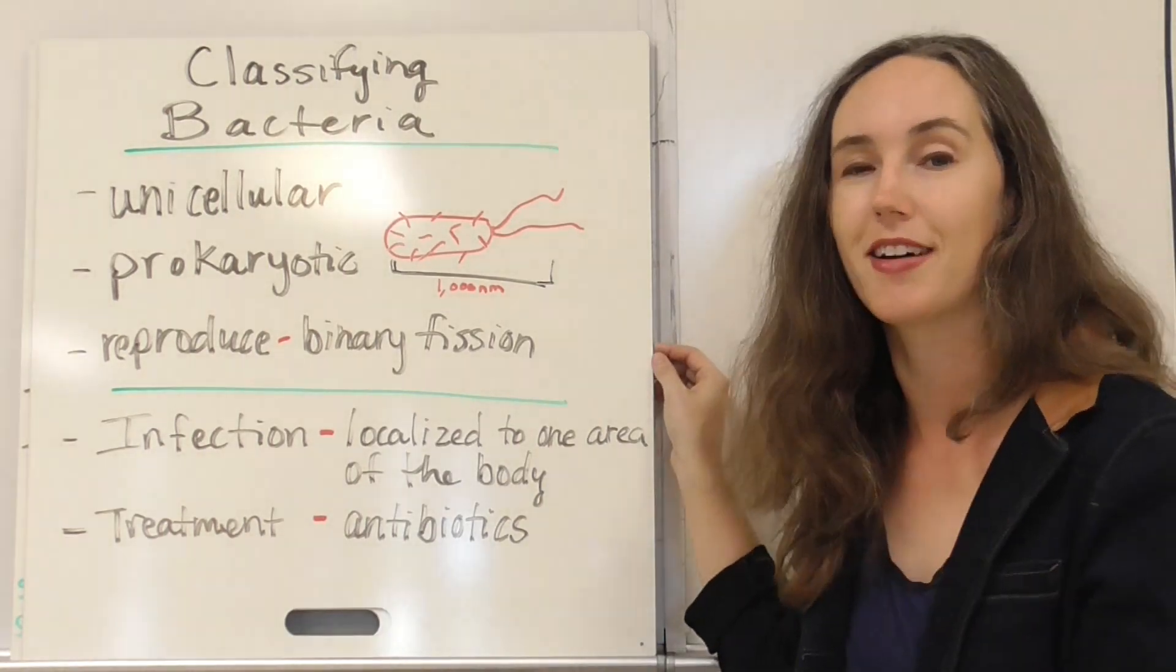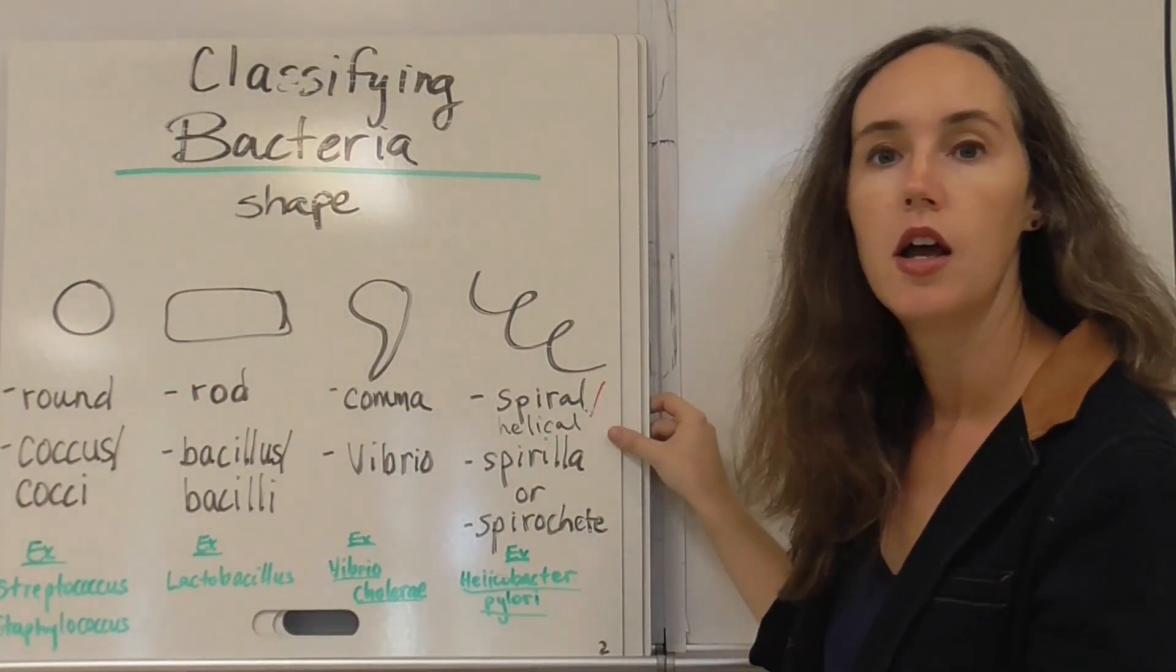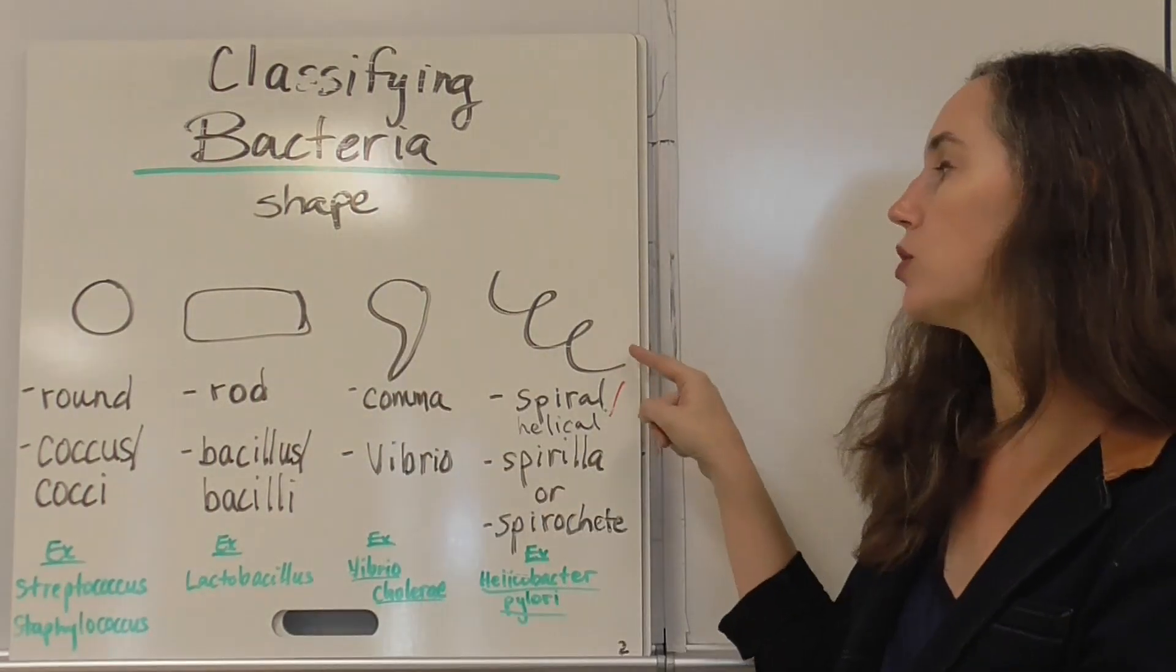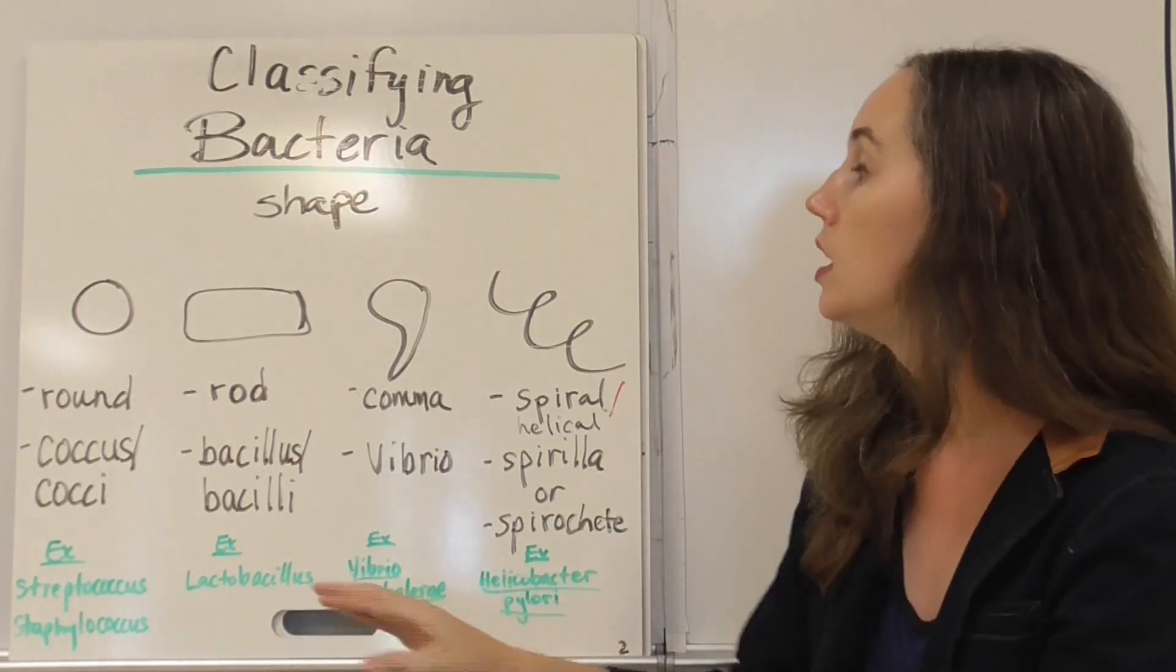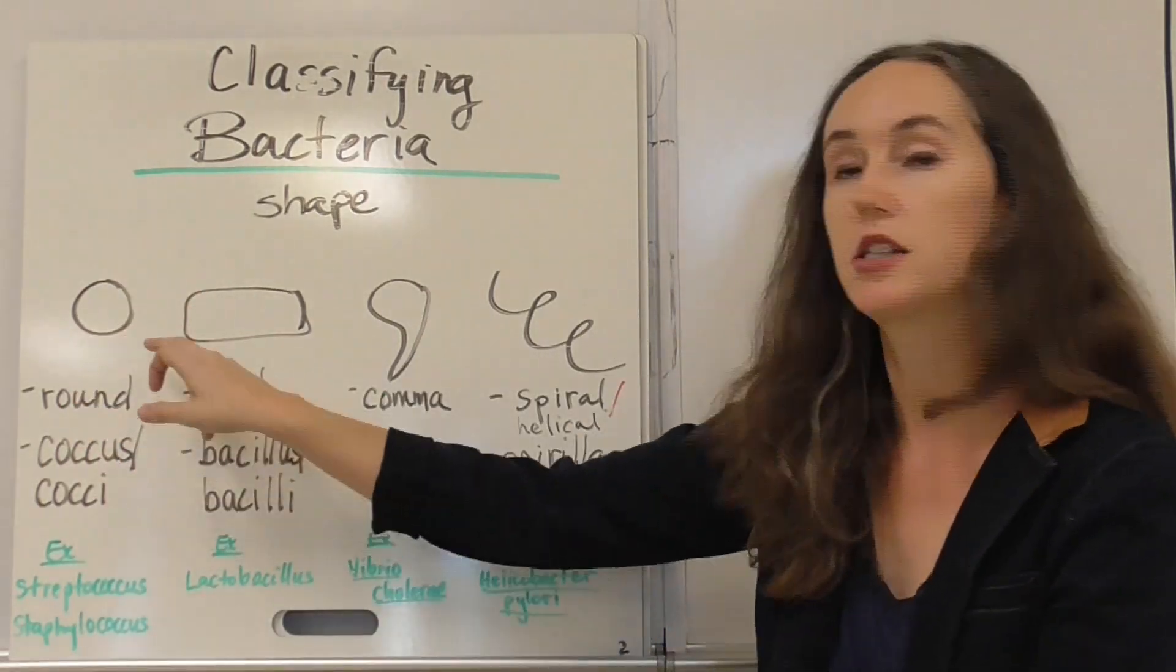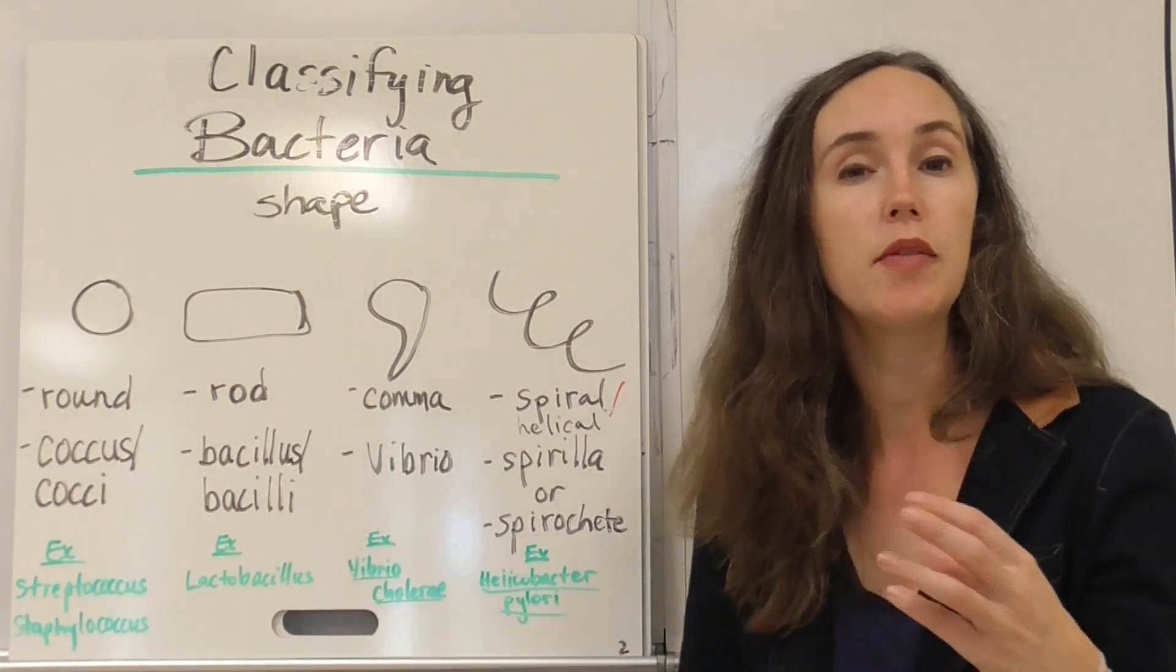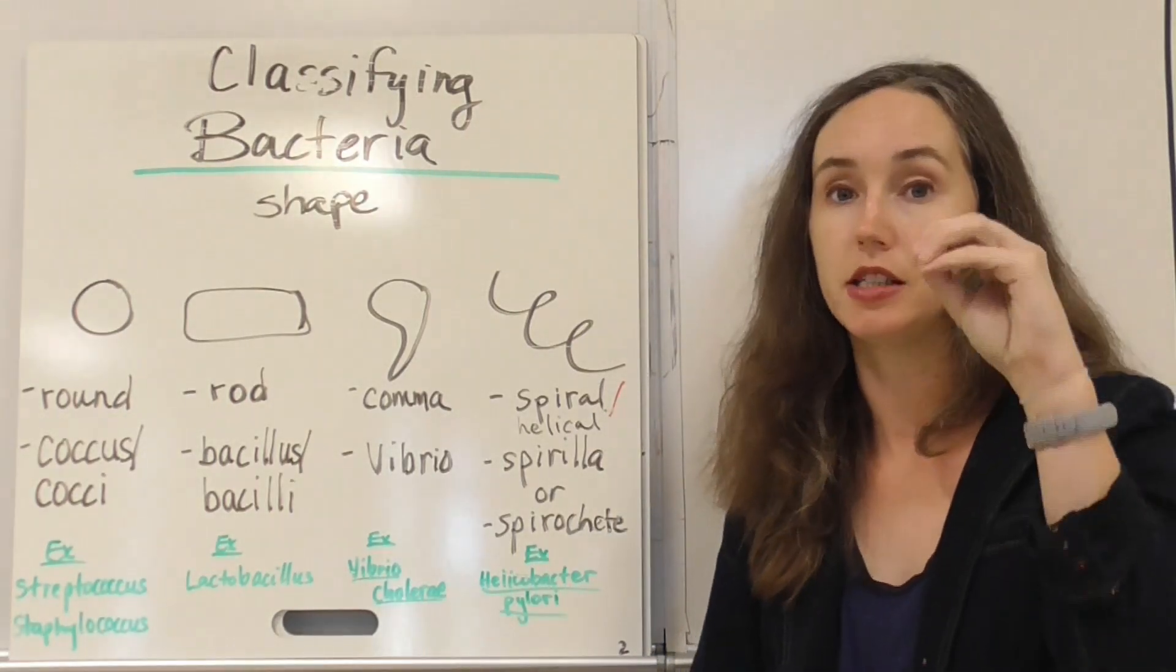Now let's look at the four ways that we can classify bacteria. First we can classify them by shape. Bacteria can be round, rod shaped like a pickle or a hot dog, or a spiral. And this spiral is sometimes very tight and then sometimes is long and looser and more flexible. The round ones are called coccus or cocci shaped bacteria. Some examples are streptococcus and staphylococcus. So coccus is right in the name. So even if you've never seen a streptococcus bacteria before, you can know based on the name that it is spherical in shape.